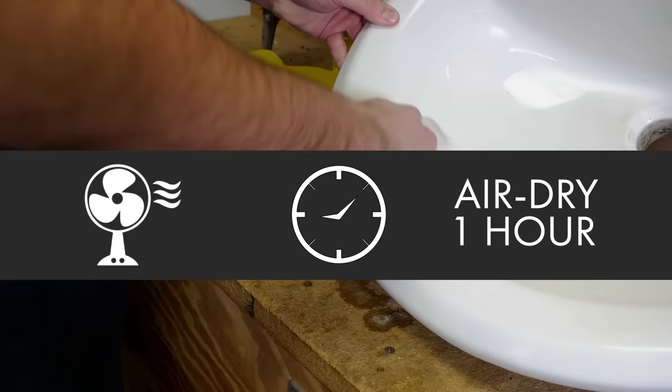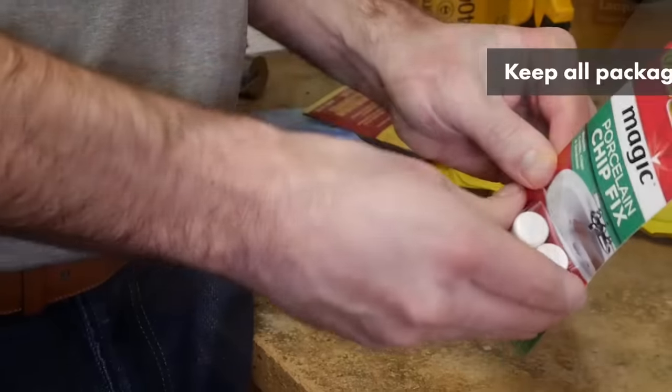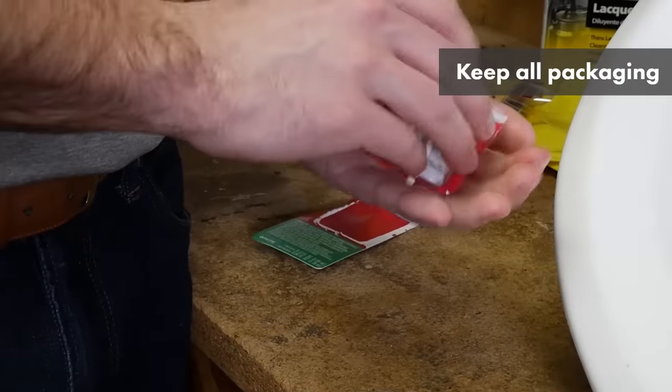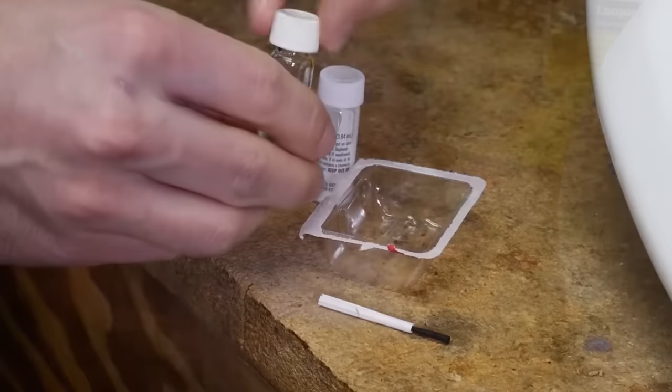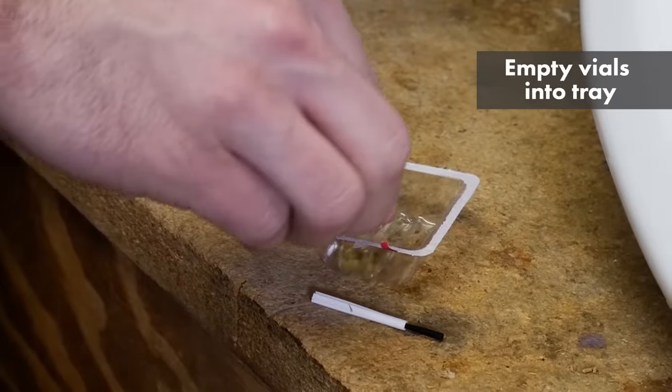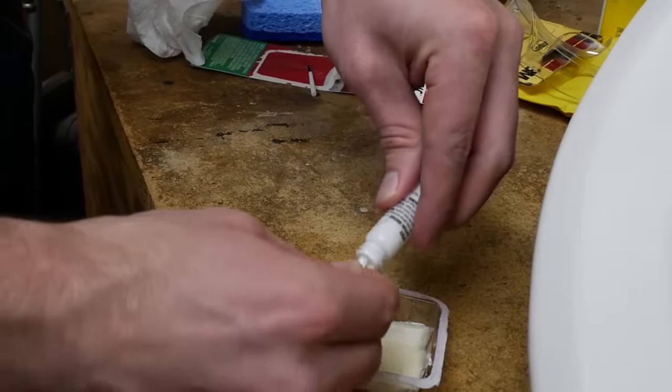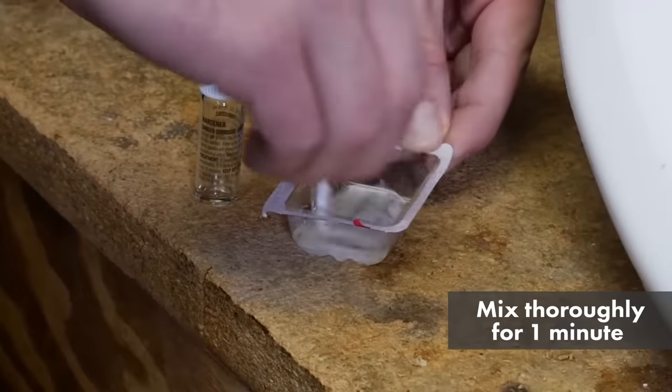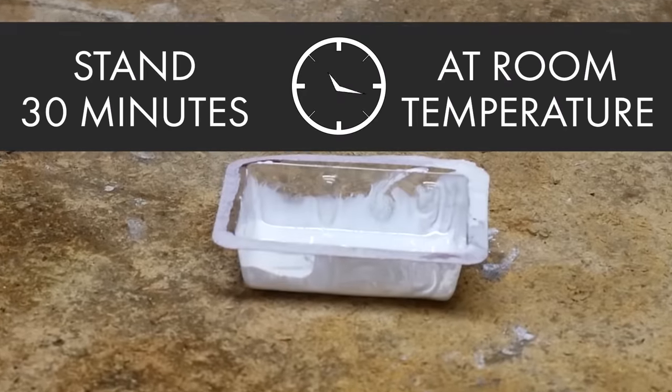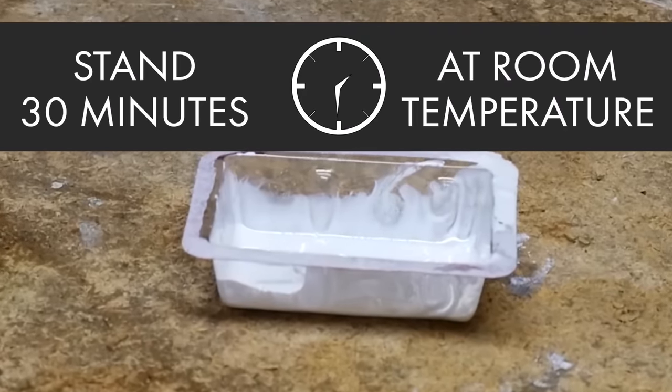While you're waiting, prepare the epoxy. The plastic containing the two vials is your mixing tray. Remove the tray and empty the contents of both vials into the tray. Scoop out any liquid that sticks in the vial. Mix thoroughly for one minute. Allow to stand 30 minutes at room temperature so the epoxy can form properly.